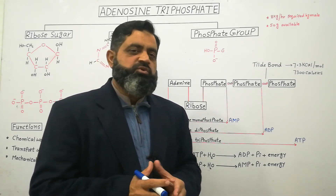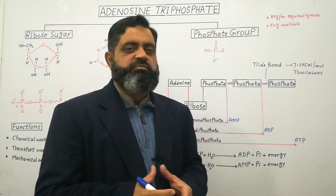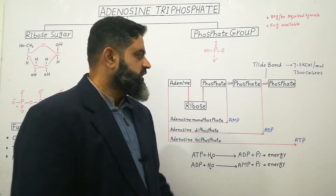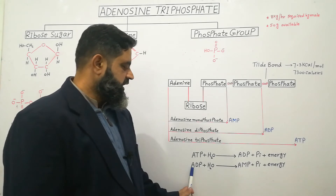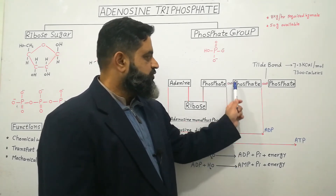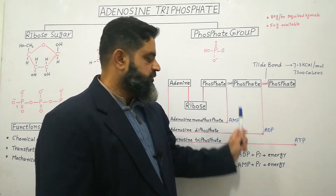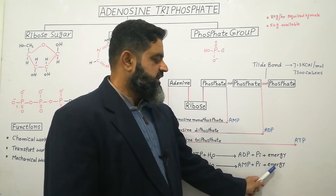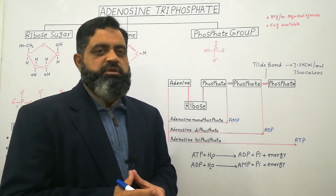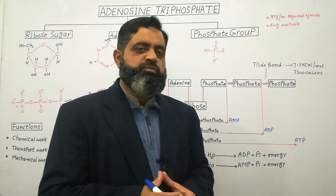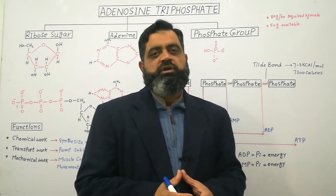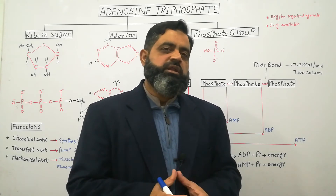This ADP molecule is recycled again in the form of ATP in the mitochondria. But in an emergency situation when we need more energy, the ADP molecule can be broken again. When ADP is hydrolyzed with water it changes into AMP, and one more phosphate group is released as inorganic phosphate, and energy is obtained which is also equal to 7.3 kilocalories per mole.